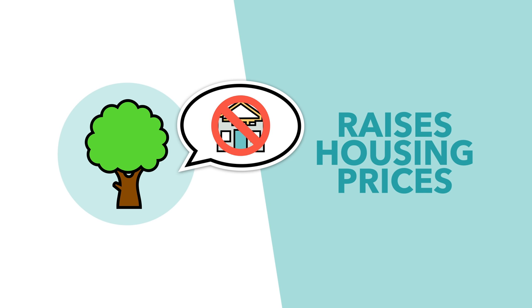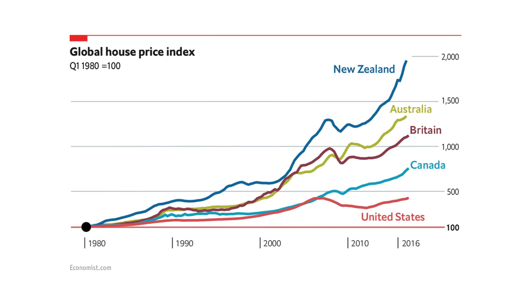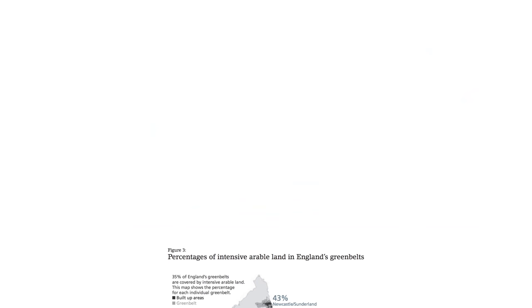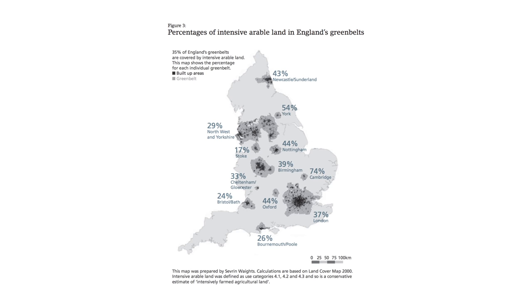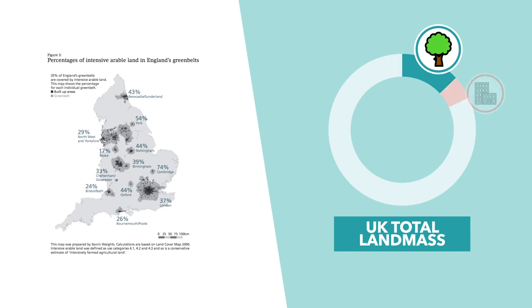It's no coincidence that the countries which have seen the steepest increase in house prices — Canada, Australia, New Zealand, and the UK — all use some form of green belt. About 13% of the UK's total land mass, or about 1.6 million hectares, is green belt, more than double the 5% or so that's covered by urban development.